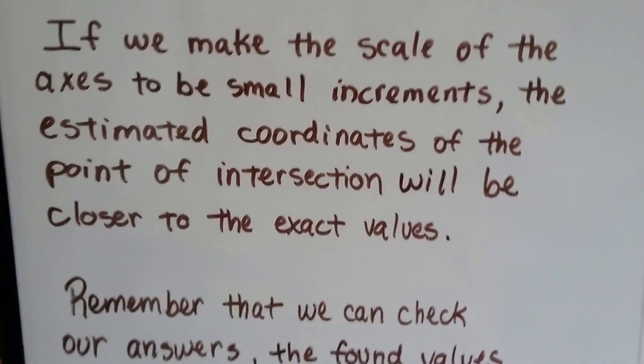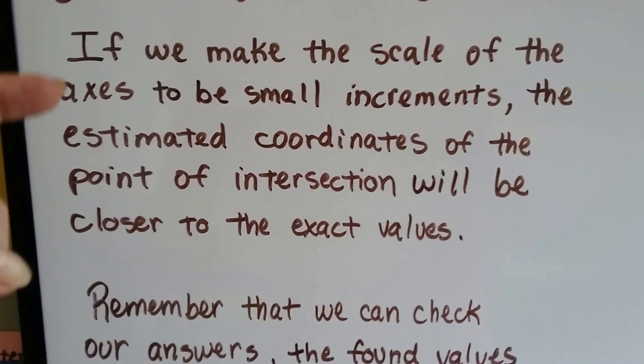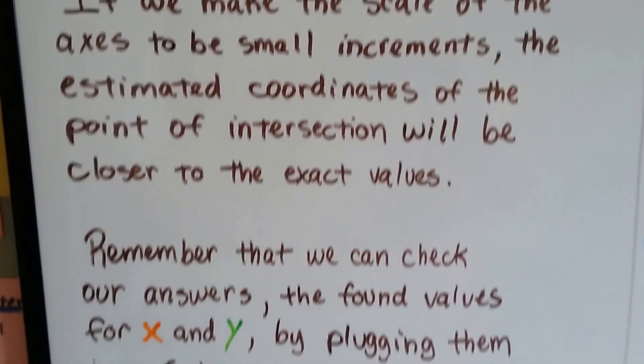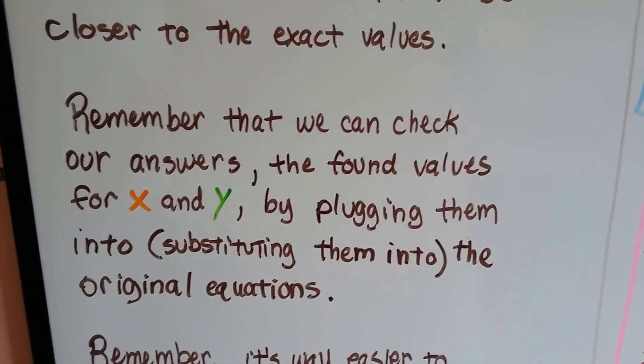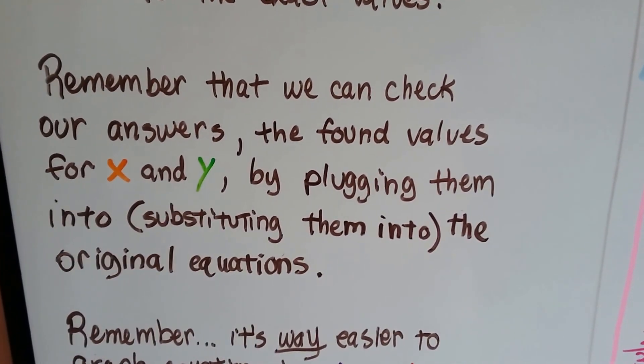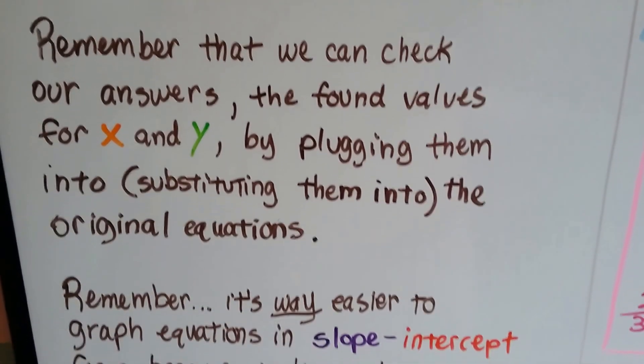If we use four boxes to represent one, so that we would have one-fourth increments, we would be closer to exact values. And remember that we can check our answers, the found values for x and y, by plugging them into, substituting them into the original equations.